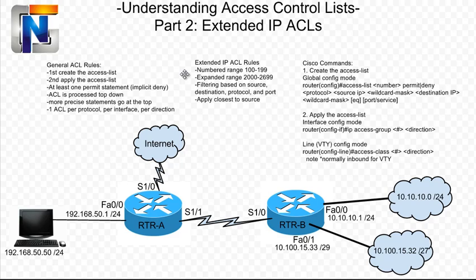Next, we need to talk about some specific rules when it comes to Extended IP Access Control Lists. The numbered range is different. With Standard, it was 1 to 99 for the basic number range. With Extended, it's 100 to 199, with an expanded range of 2,000 to 2,699. All Extended IP Access Control Lists are filtered based on the source, destination, protocol, and the port. In this situation, we're going to be applying our access control list closest to the source. When we did Standard, we applied them closest to the destination. For Extended ACLs, we always apply them closest to the source, so we're able to stop the routers down the line from having to process unnecessary information.